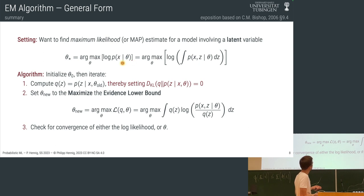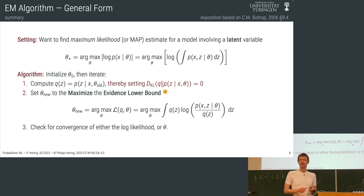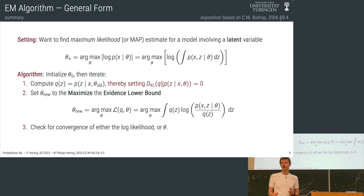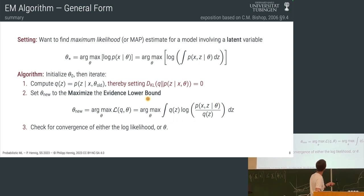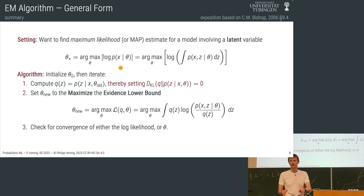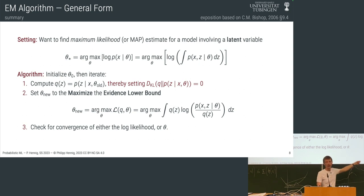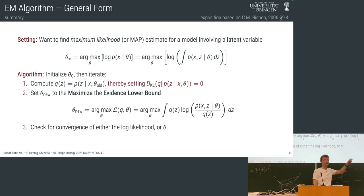By doing that, we've realized in hindsight that we are constructing an approximation to the distribution over z under the model, which allows us to compute the exactly correct value of the evidence function at this particular point in theta. This is the case because this choice of q minimizes the KL divergence between the posterior and q — simply because it is the posterior. Then we optimize the ELBO with respect to theta.